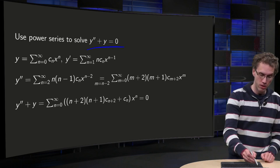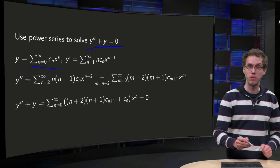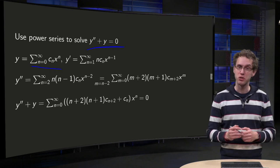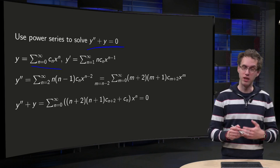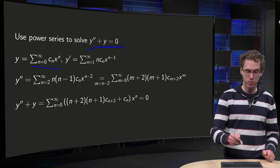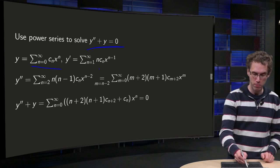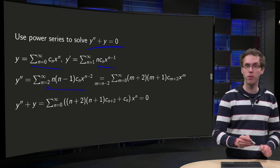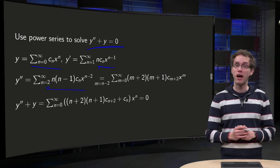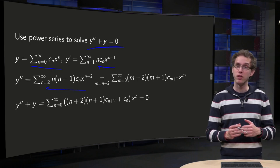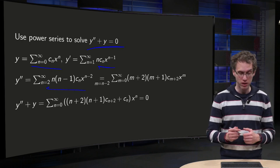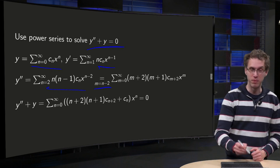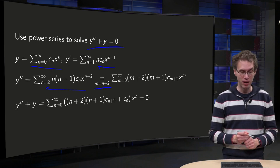We set y equals the sum of cₙ xⁿ as a power series. We need y prime and y double prime, so here we have y prime, here we have y double prime, and then we shift the summation index, setting m equals n minus 2.